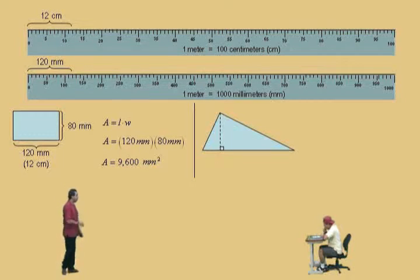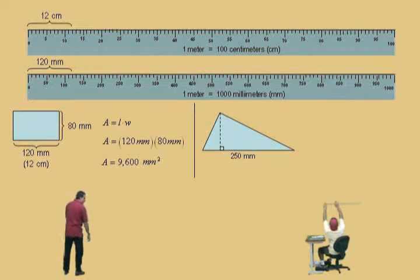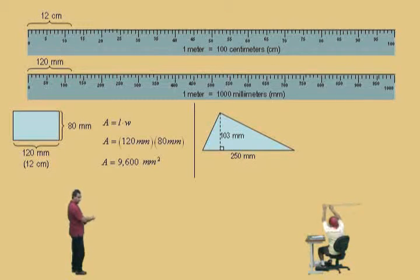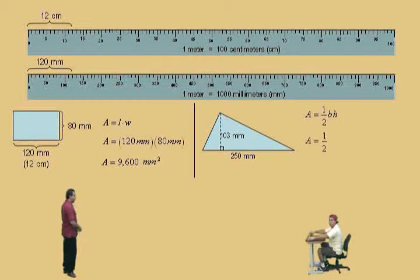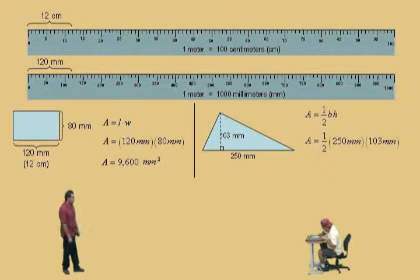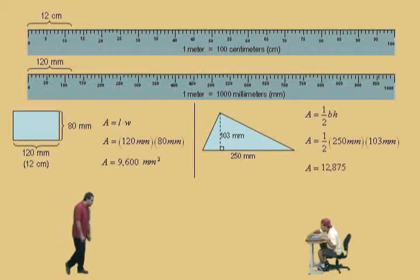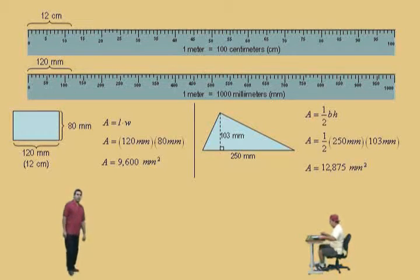Let's do a triangle. This triangle has a base of two hundred and fifty millimeters — please show everybody, Charlie. Very nice. And its height is one hundred and three millimeters, Charlie. Okay, area is one-half base times height. Put in our numbers: base is two hundred and fifty millimeters, height is one hundred and three millimeters. Put the numbers in your calculator. What do you get, Charlie? Twelve thousand eight hundred and seventy-five millimeters squared. There are some problems with area.